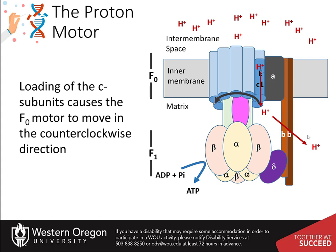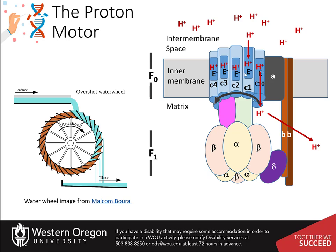This flow utilizes the proton motive force to drive the rotation of the F-naught domain, which alters the catalytic activity of the beta subunits, leading to the production and release of ATP molecules from the synthase. All of the C subunits are active and working in concert to drive the rotation of the C subunit motor. It's a bit like a water wheel — protons are poured in at the top, which generates movement of the C subunits until the proton can be offloaded on the opposite side of the membrane.